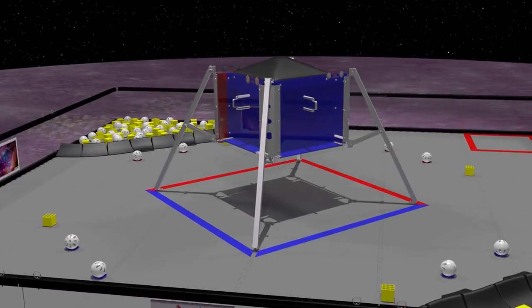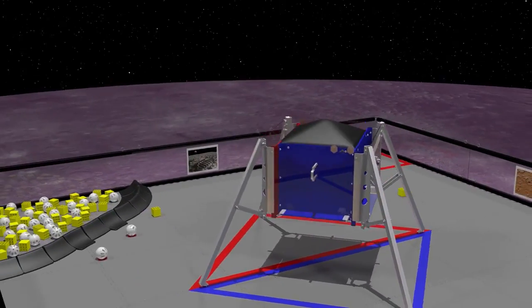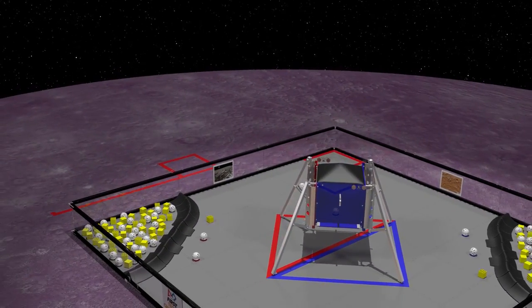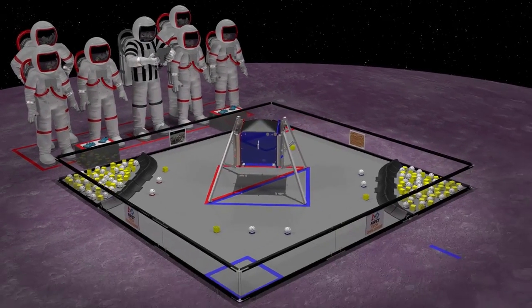The lander sits in the center of the field with alliance-specific landing zones marked by red and blue tape. Red and blue alliance stations are taped off on opposite sides of the field, including the scoring referee stations.